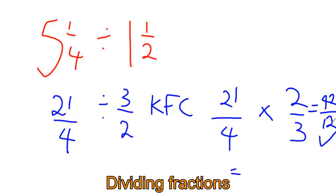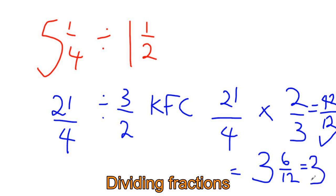We have 3 lots of 12 in 42. Three lots of 12 is 36, and we need 6 more to get to 42, so the mixed number is 3 and 1 over 2. We simplify by dividing both the numerator and denominator by 6 — there is 1 lot of 6 in 6 and 2 lots of 6 in 12.